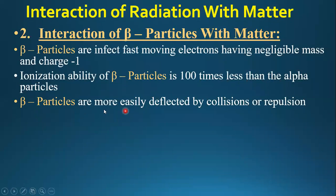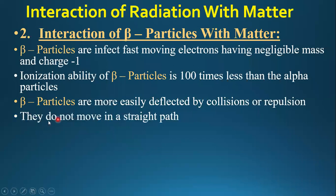Beta particles are more easily deflected by collision and electrostatic repulsion because their mass is very small. They do not move in a straight line. When a beta particle (which has a negative charge) encounters another negative ion, the electrostatic force deflects it from its straight path.